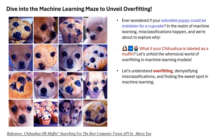Now let's dive into the machine learning maze to unveil overfitting. Ever wondered if your adorable puppy could be mistaken for a cupcake? In the realm of machine learning, misclassifications happen, and we're about to explore why. What if your chihuahua is labeled as a muffin? Let's unfold the whimsical world of overfitting in machine learning models, demystifying misclassifications and finding the sweet spot in machine learning.